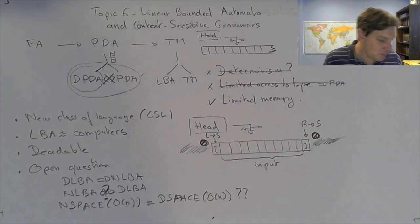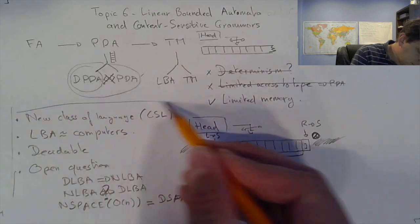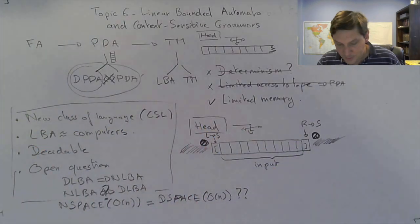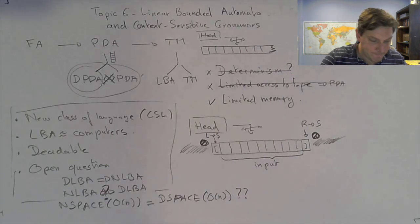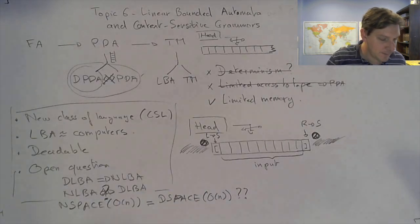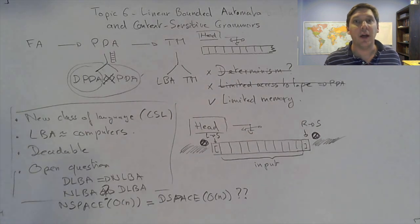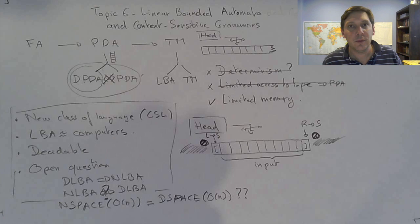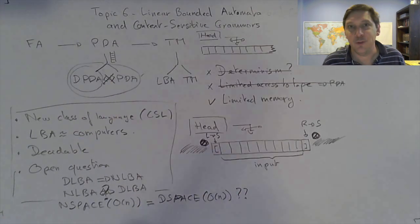So there are four interesting aspects of LBA. Now, with every new automaton, the question arises: what is the associated grammar? That's what has been happening so far. To each automaton we have associated a certain grammar.